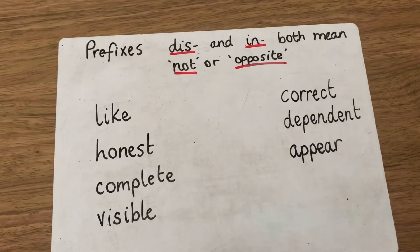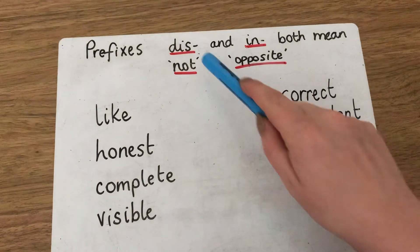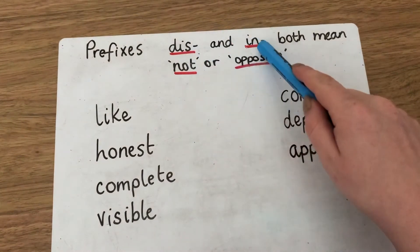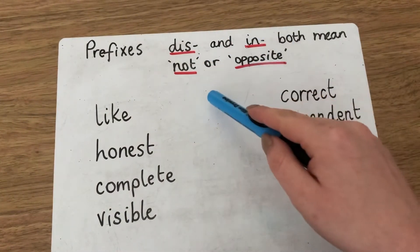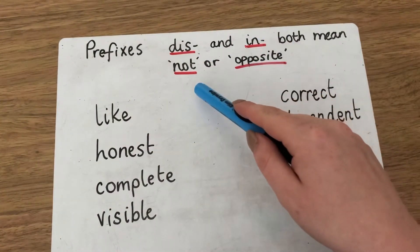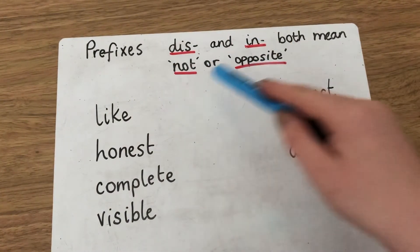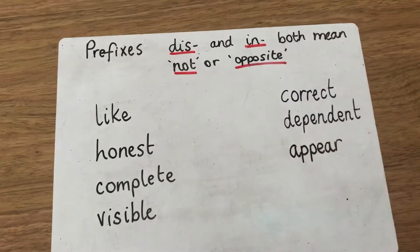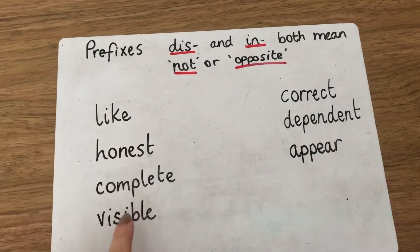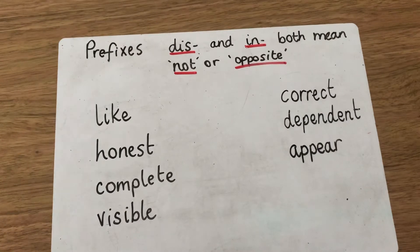So we've got two prefixes here: 'dis' and 'in', and they both mean 'not' or 'the opposite'. So when we add these to our root word, it changes the meaning to the opposite, or 'not'.